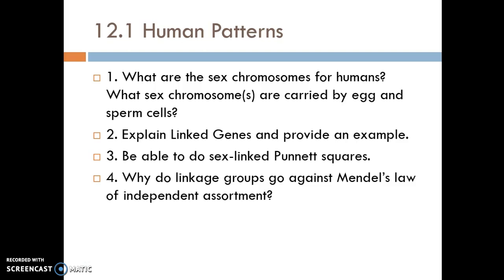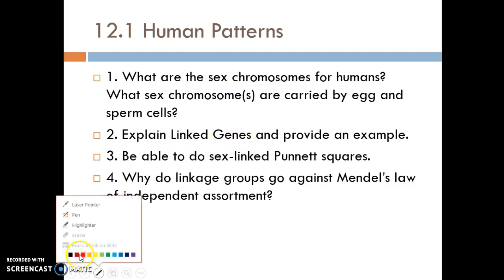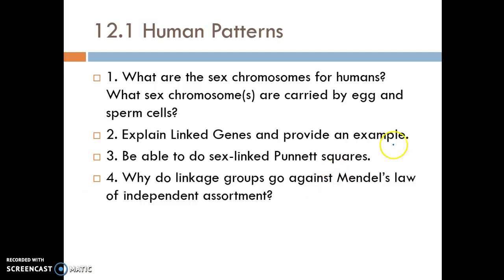Number three: be able to do sex-linked Punnett squares. With sex-linked Punnett squares, we want to make sure that we show the trait. So let's say it's colorblindness and it's linked to the X chromosome. Say we have a heterozygous female for colorblindness, and then we have a male who is colorblind, so they'd have a little c and then the Y.